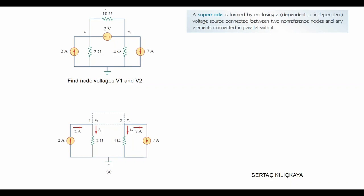Here we have a super node in the circuit and it is right there. It includes a 2 volt independent voltage source and in parallel with it a 10 ohm resistor.